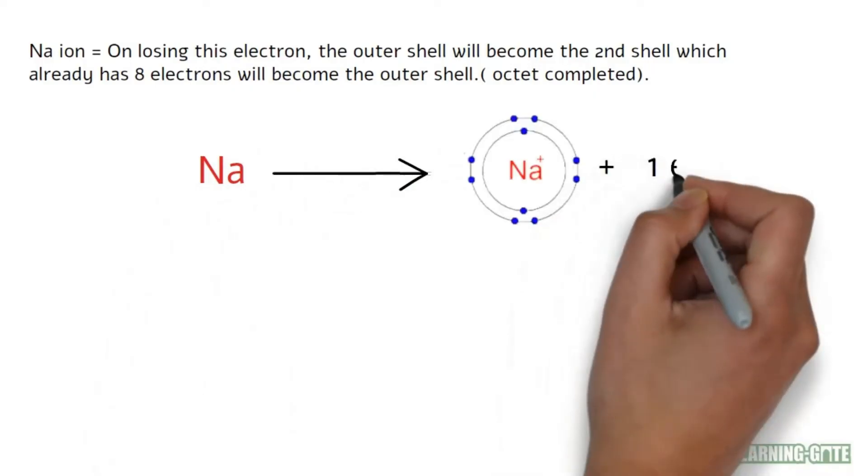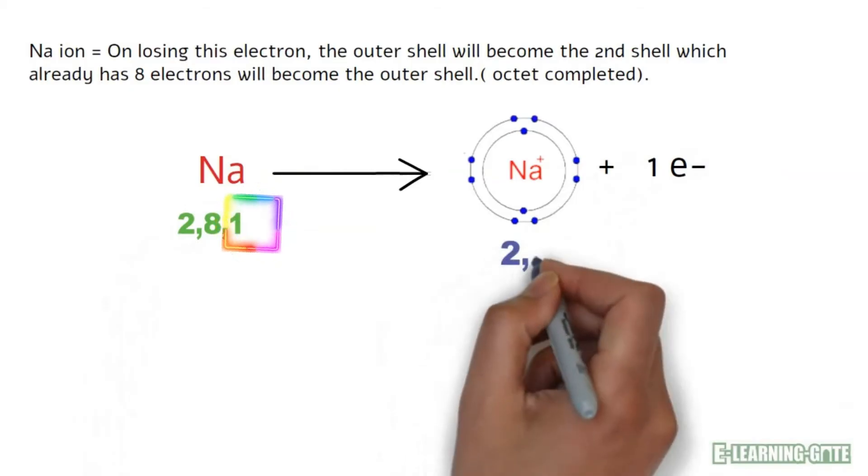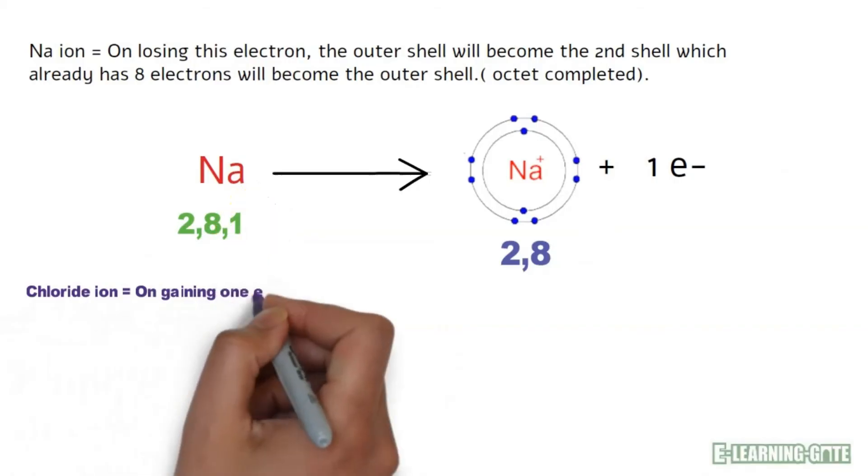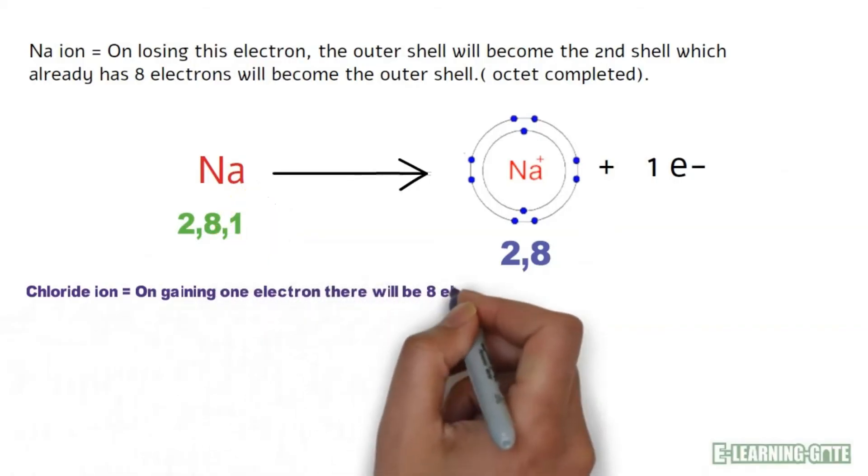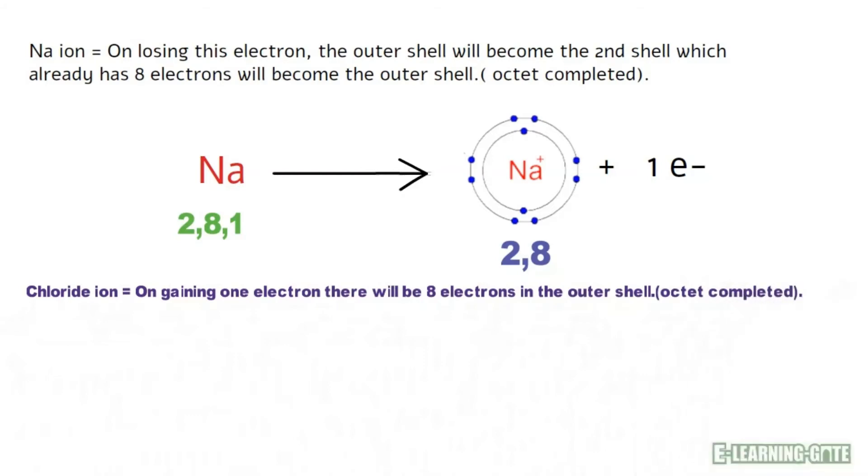Look at this process which is given below. The electronic configuration of sodium has changed. The electron lost by sodium will be taken by chlorine. Chlorine will complete its outer shell with eight electrons and become chloride ion.